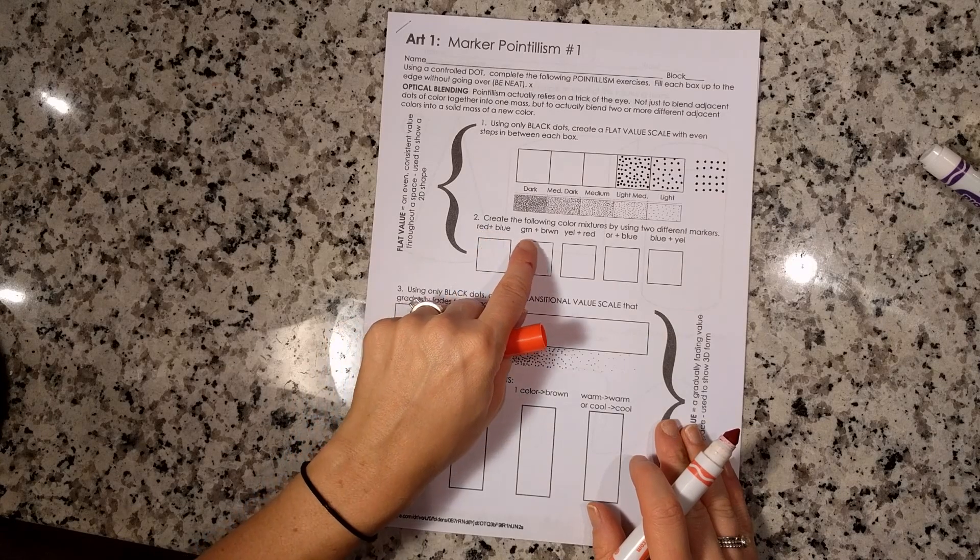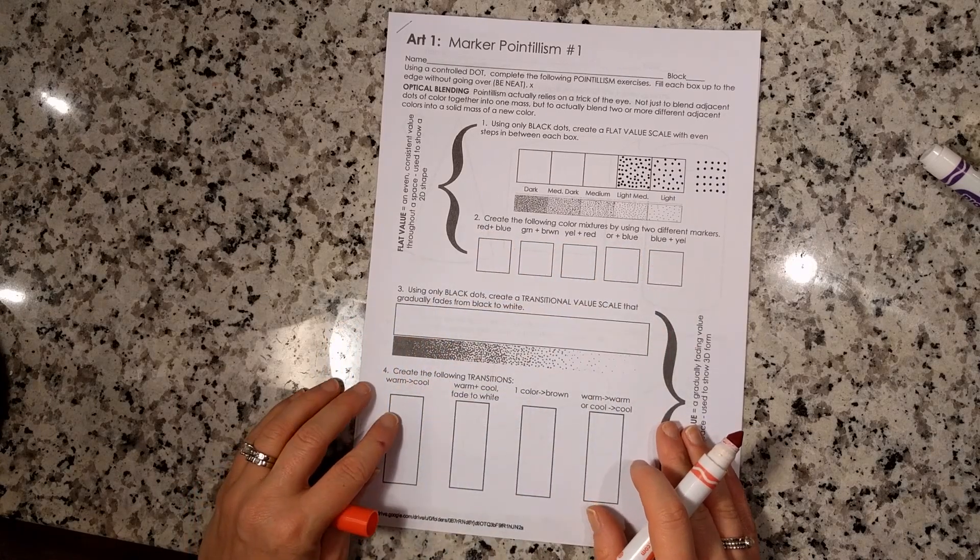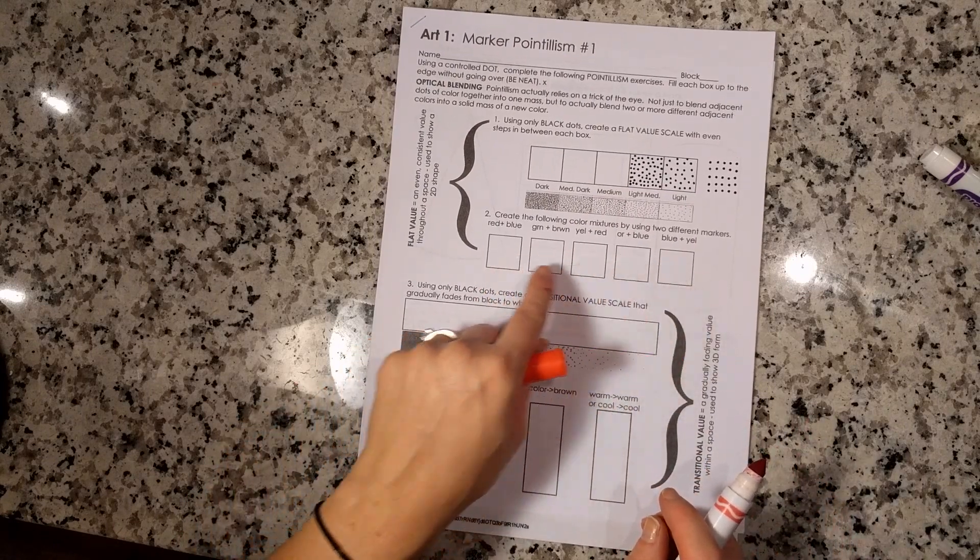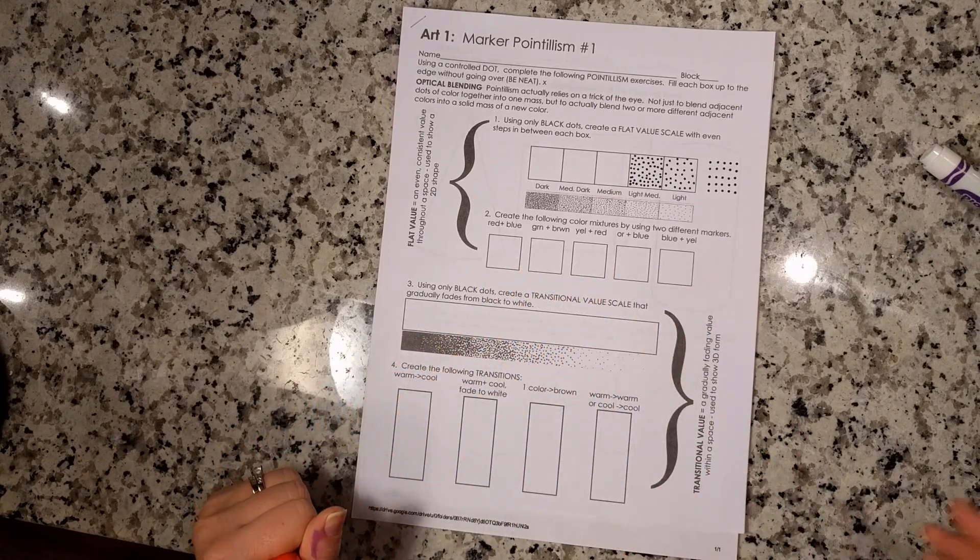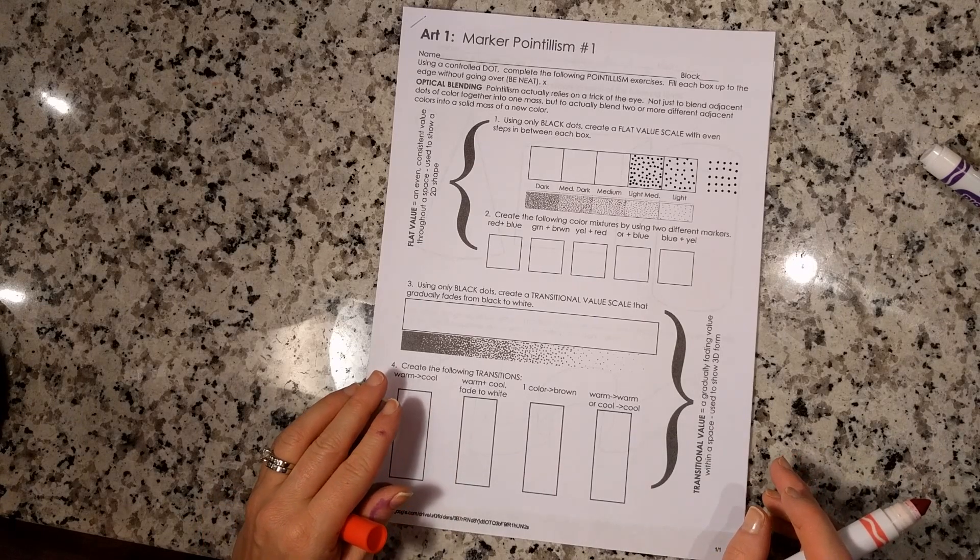Up here I have some general notations of what colors to mix together. When you're finished with these, you do not want to have much of the white paper showing, so you want it to be pretty close together.